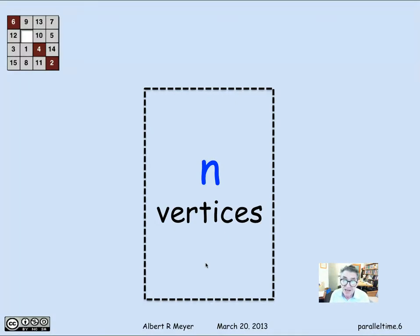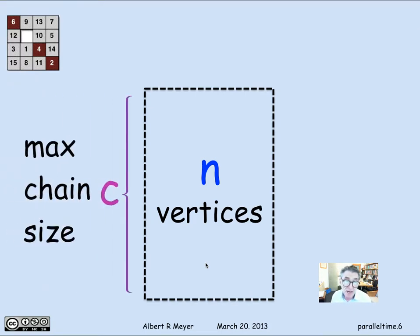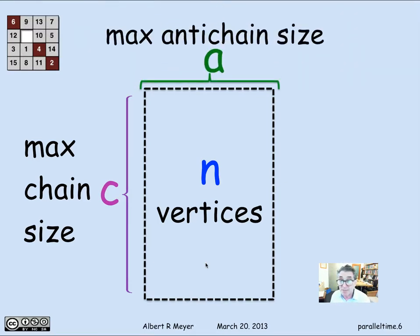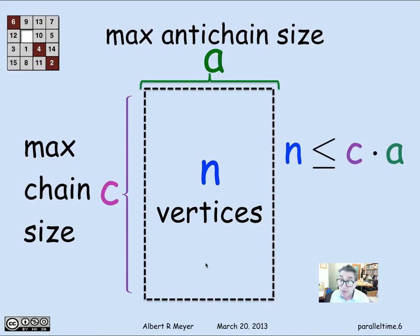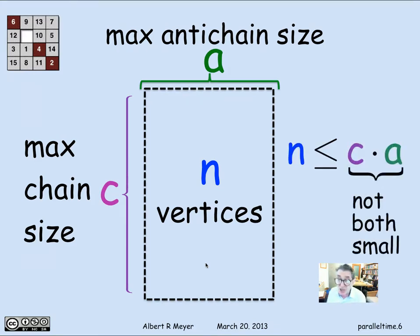This is a general phenomenon. If you have a DAG with n vertices, maximum chain size C, and maximum anti-chain size A, then clearly the total number of vertices is at most C times A. The total number of tasks you can complete in C steps using at most A processors is bounded by C times A. So you can't have both the anti-chain size and the chain size be too small, because their product has to be at least n.